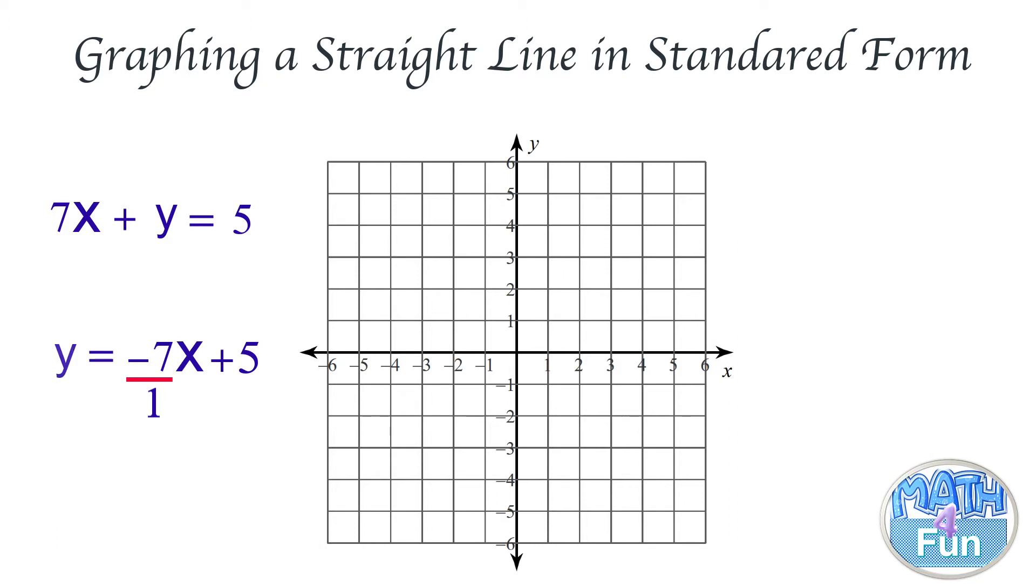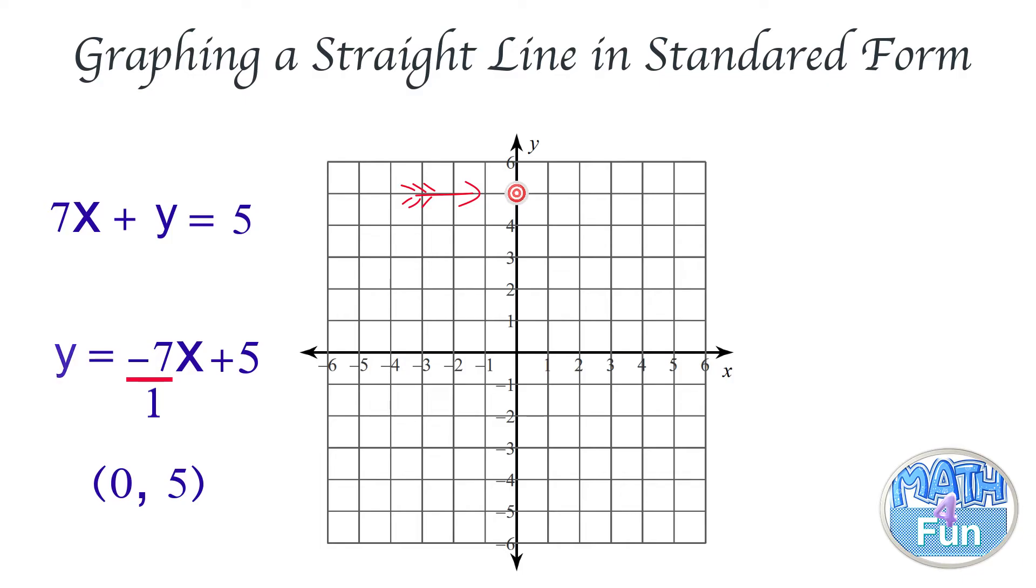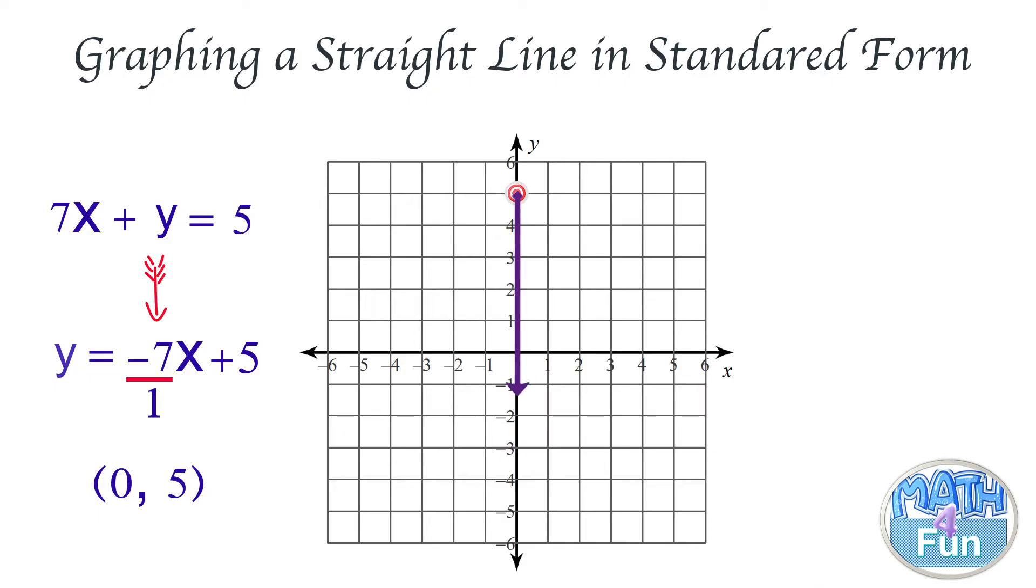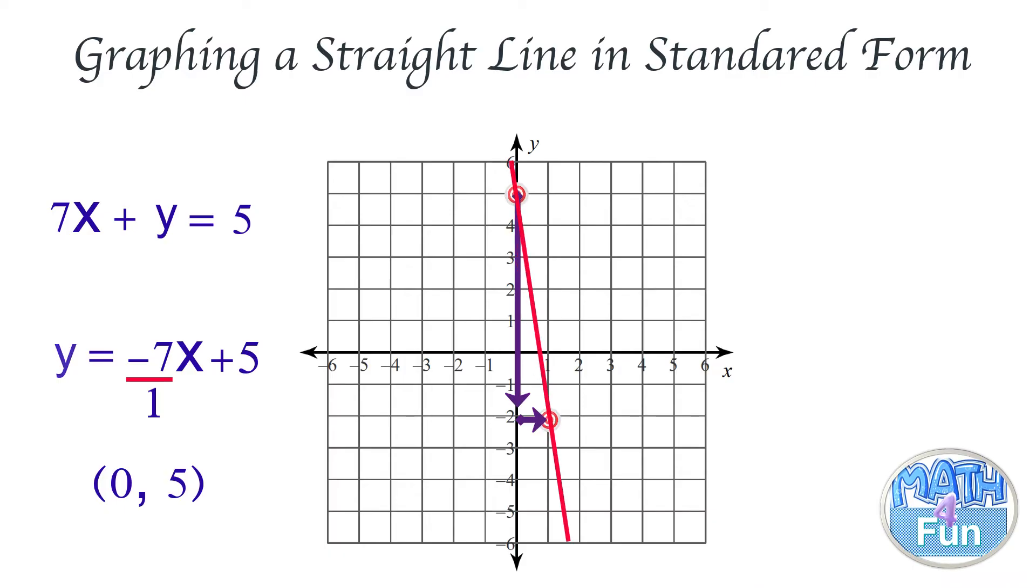What we need here is to go to the y-intercept, which is (0, 5), and we put it at 0, 1, 2, 3, 4, 5. Then we do the slope. The slope is -7/1, which means we go down 7 units and 1 to the right. Then we have the other point and we can join the two points to get the line.